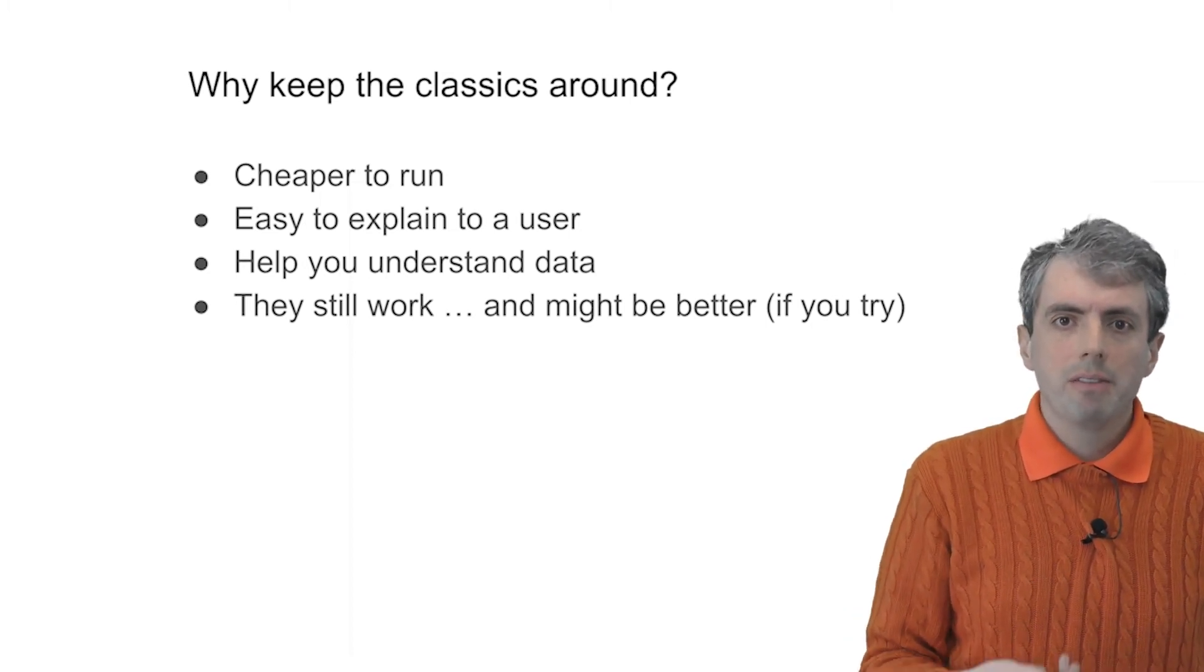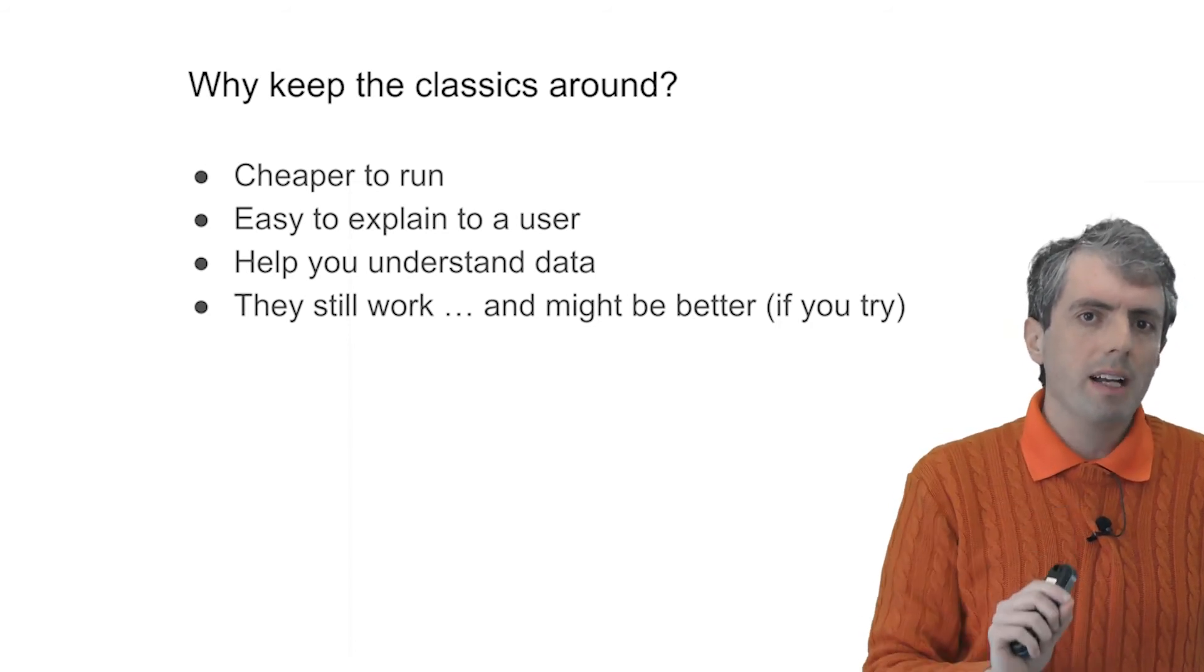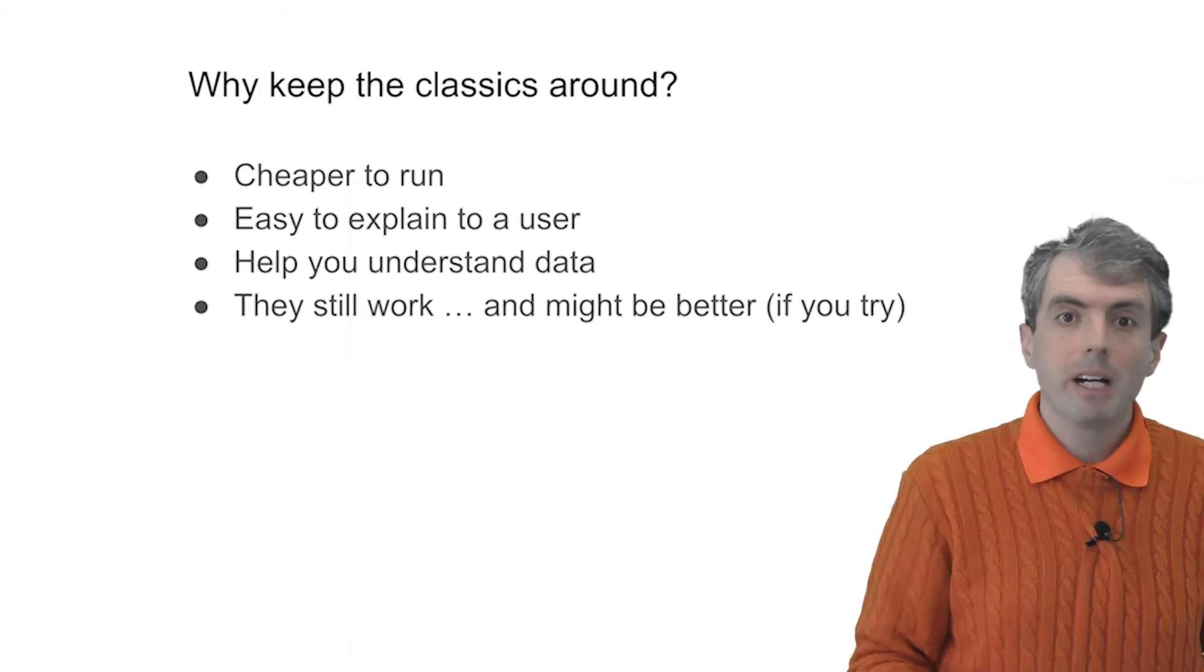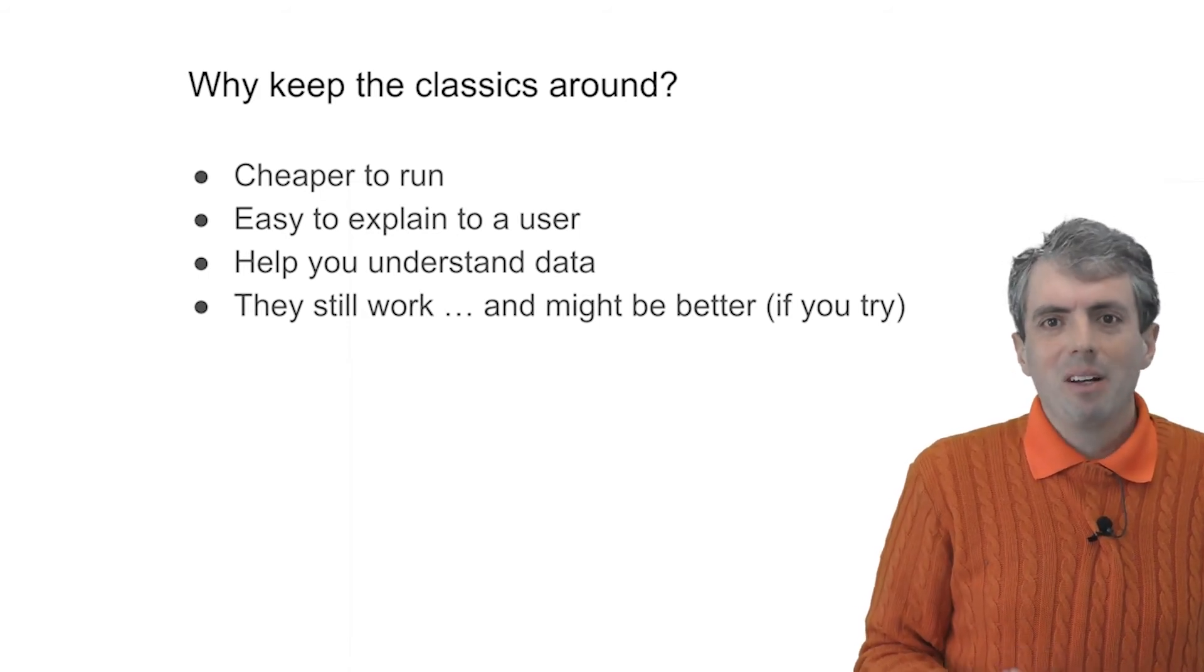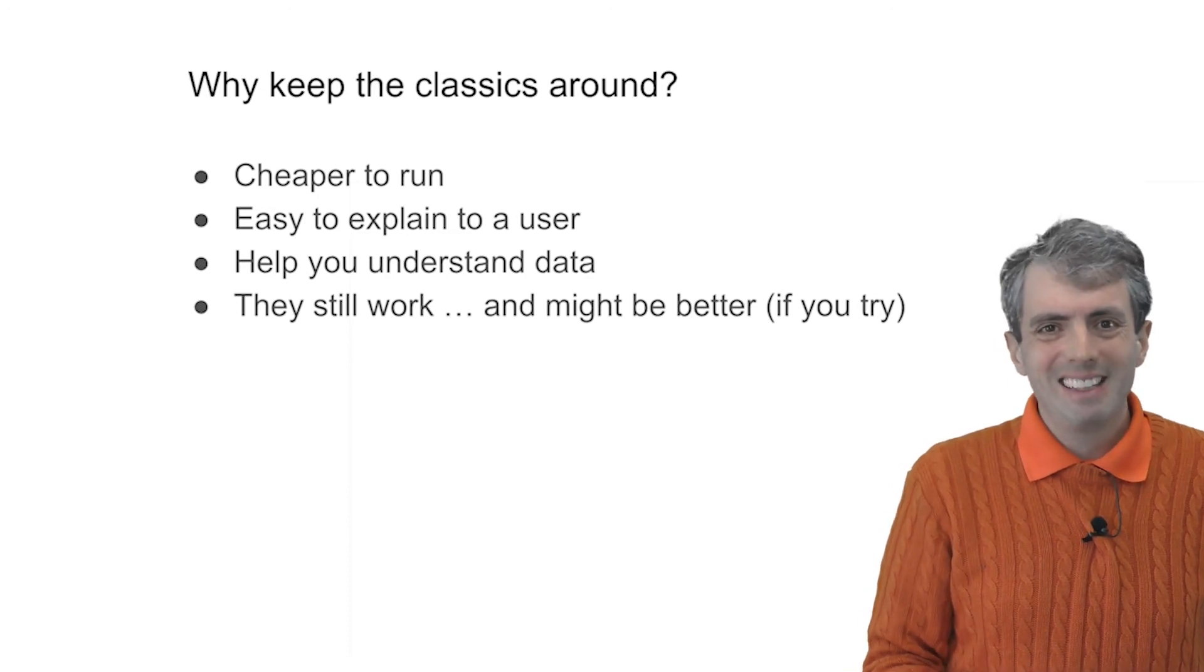In a Pitman-Yor language model, for example, we can perfectly reconstruct which samples, which documents allowed us to make a prediction given some context. And although influence functions in neural models can do something like that, it's a poor proxy.